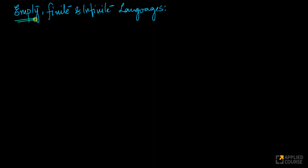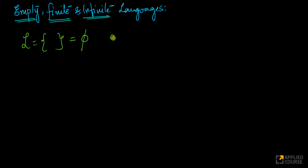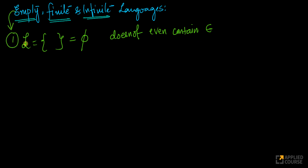Now there are concepts of empty, finite, and infinite languages. An empty language has no elements — it is equal to the empty set. Importantly, an empty language does not even contain epsilon. It does not contain the empty string either. A language is empty if the size of the set is equal to zero — essentially a null set.